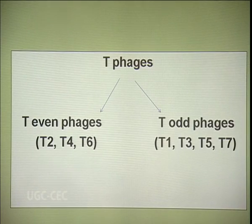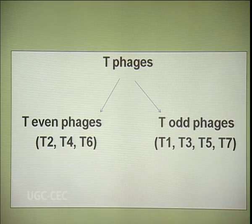T phages of E. coli are lytic phages. Seven T phages have been discovered so far — T1 to T7. T1, T3, T5, and T7 are called T-odd phages, and T2, T4, and T6 are called T-even phages.